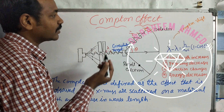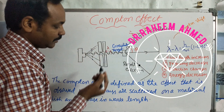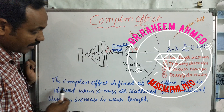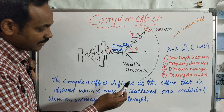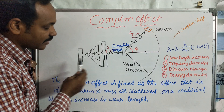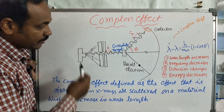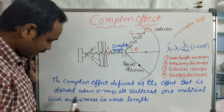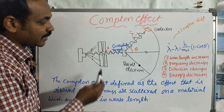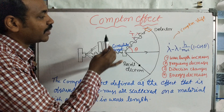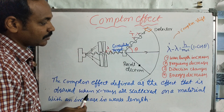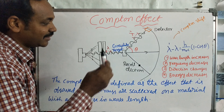Good morning students. Today we are going to know the definition of the Compton Effect. The Compton Effect is defined as the effect observed when X-rays are scattered. When X-rays or gamma rays hit a target material, there is an increase in the wavelength of the scattered X-rays. In simple words, the wavelength increases — that is the Compton Effect.